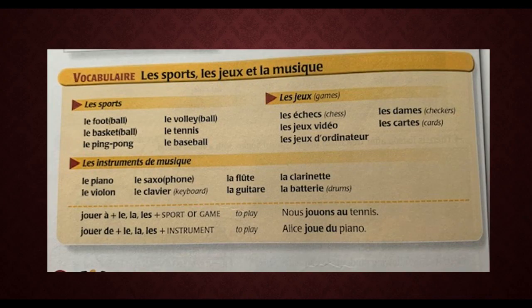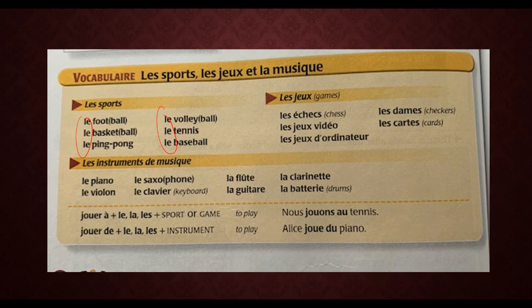Here are the sports and games vocab: le foot, le football, le basket, le basketball, le ping-pong, le volley, le volleyball, le tennis, le baseball — all masculine. Then the games: les échecs, les jeux vidéo, les jeux d'ordinateur, les dames, les cartes.